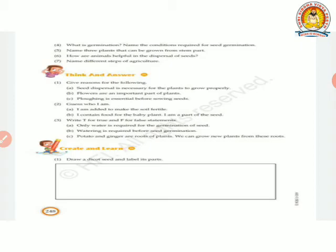Question number three. Write true or false. Only water is required for the germination of seed. Water, warmth, air, nutrients are also required, so it is false. Watering is required before seed germination, this is very true. Potato and ginger are roots of plants. Potato, ginger are stems, they are vegetables but they are stems of the plant. This will be also false.